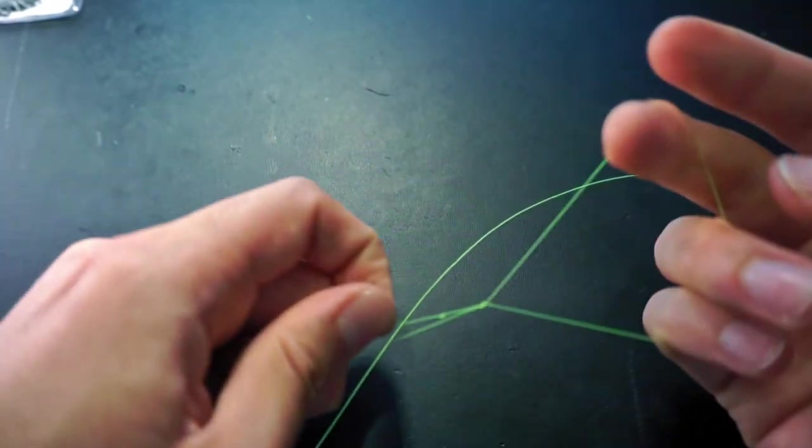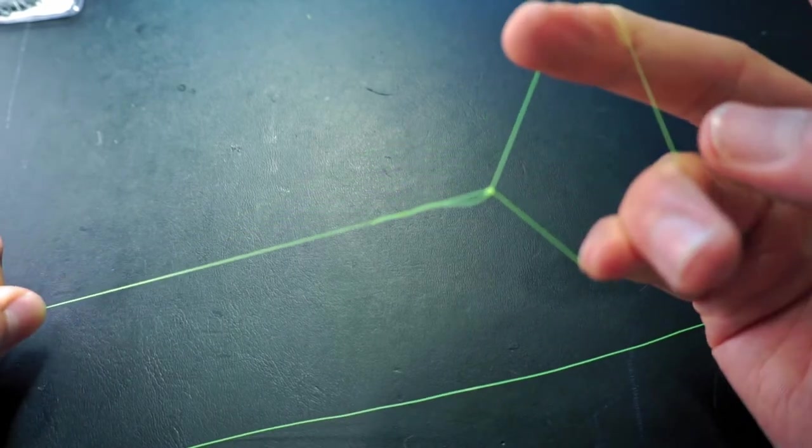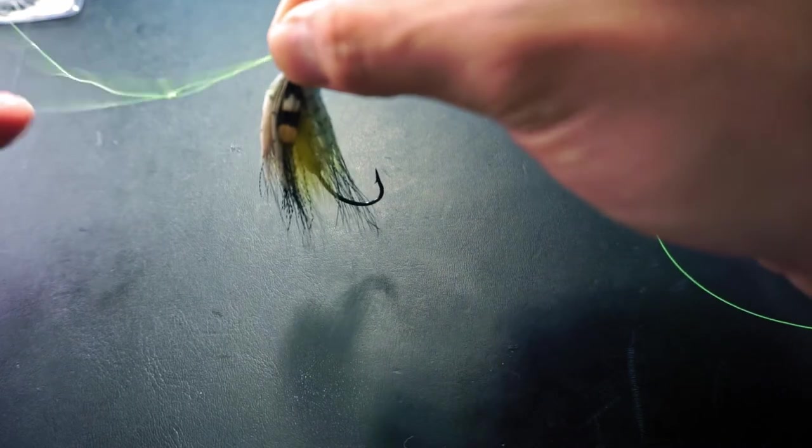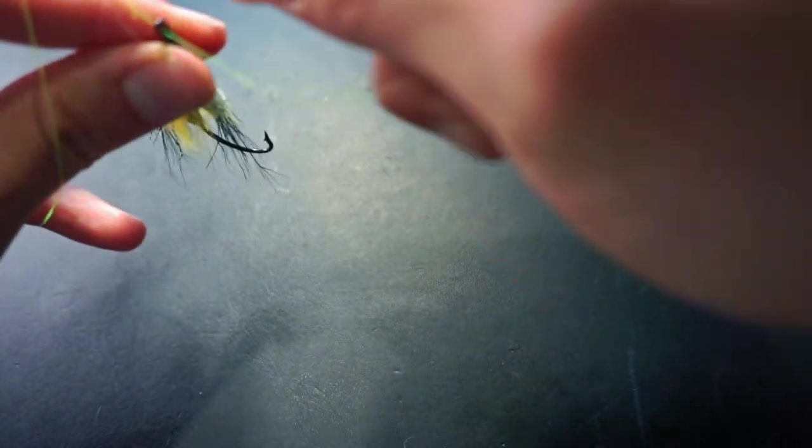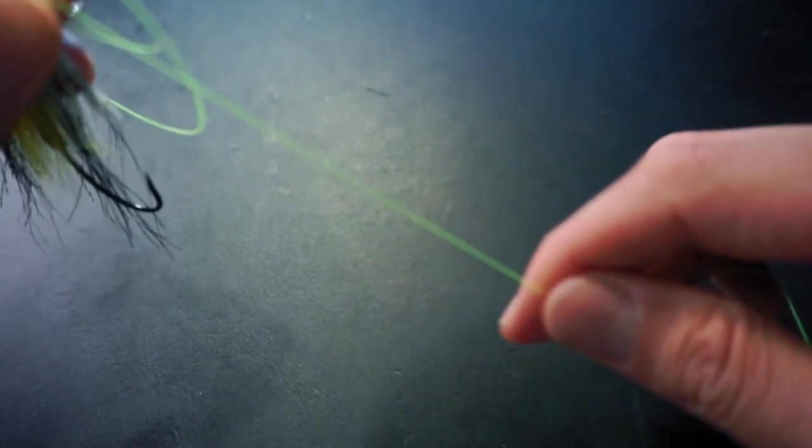Pass the tag end through both the small loop and the big loop. Wet the knot, cinch the knot closed, then bring the fly back, put the fly through the loop. At the same time, pinching the tag end and the eye of the hook as I fasten the knot.